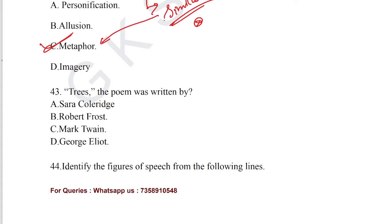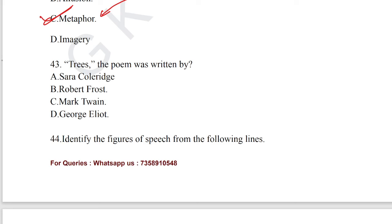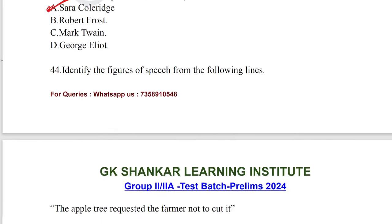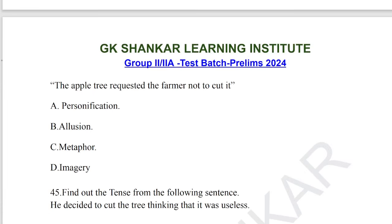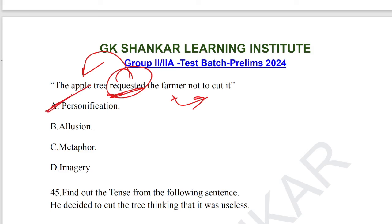Question number 43: the poem 'Trees' was written by Sara Coleridge. Option B is the correct answer for question number 43. Question number 44: identify the figure of speech. 'The apple tree requested the farmer not to cut it.' 'Requested' is a human attribute given to the non-human apple tree. Option A, personification, is the correct answer for question number 44.